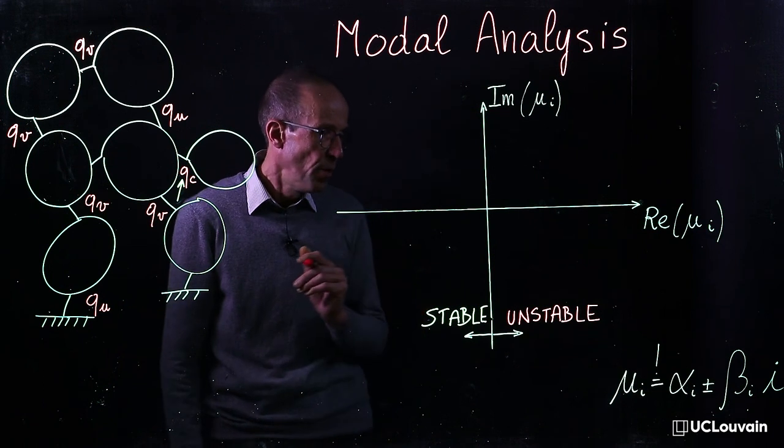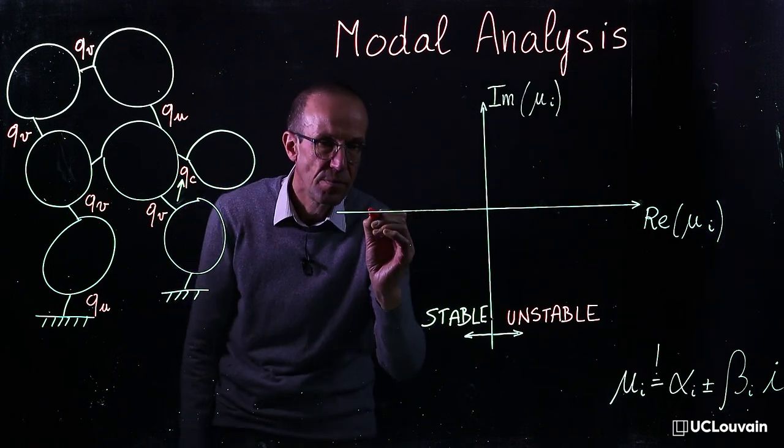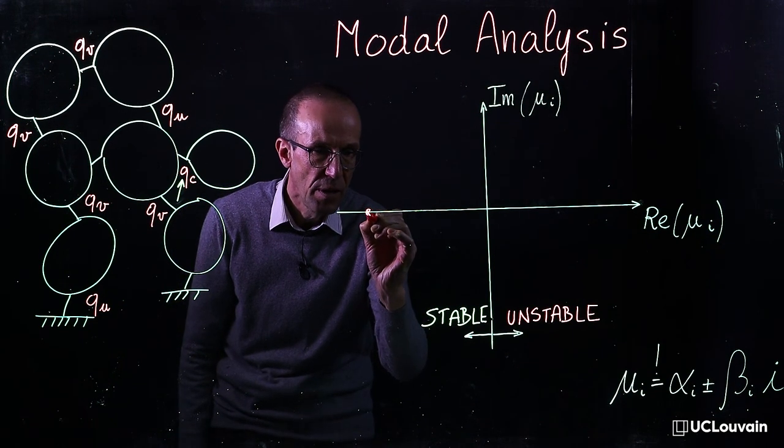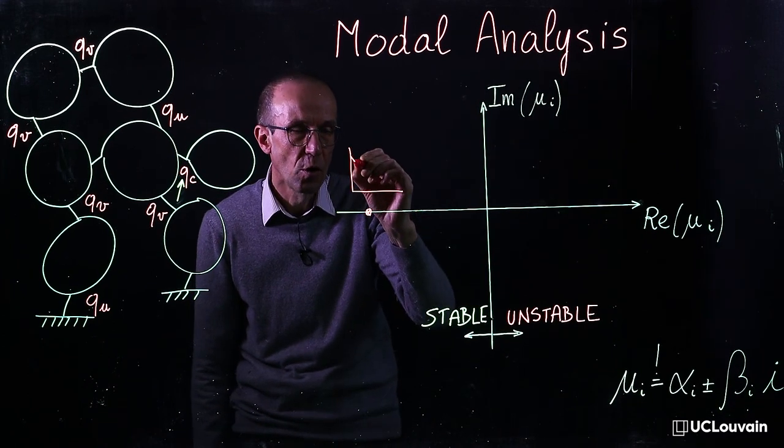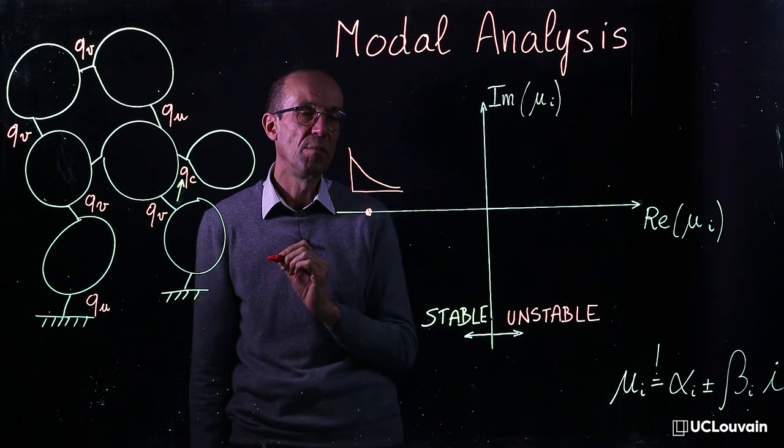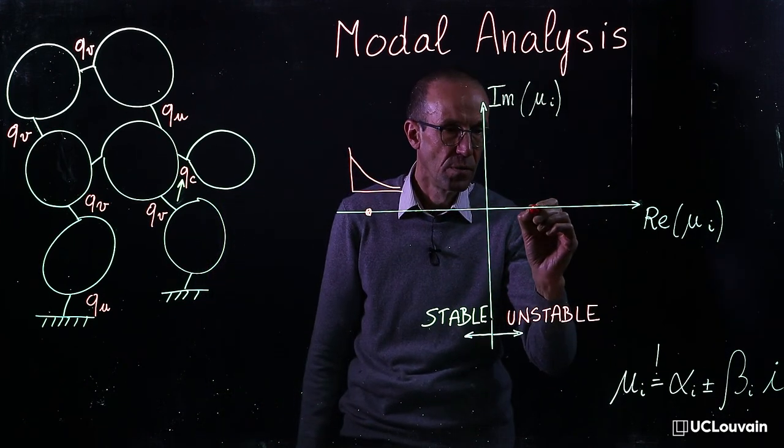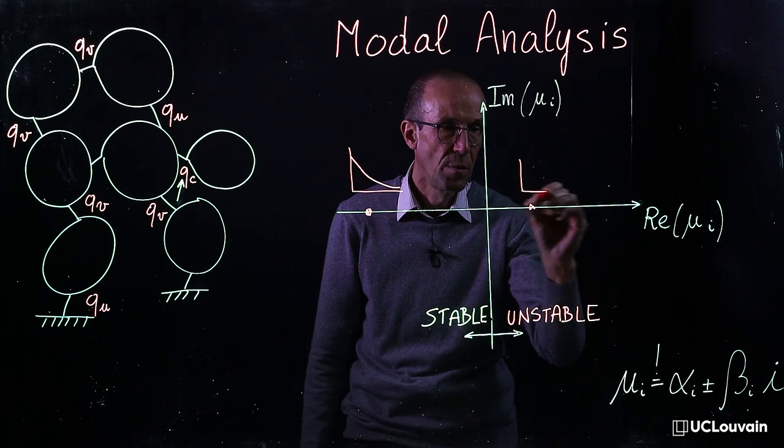A real eigenvalue, a purely real eigenvalue, refers to a non-oscillatory motion that can be stable or unstable.